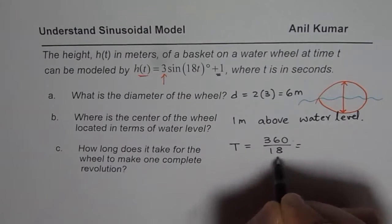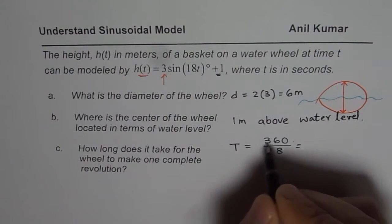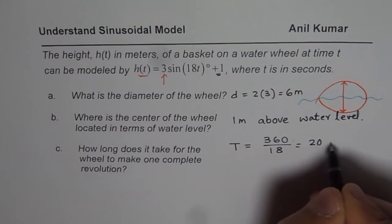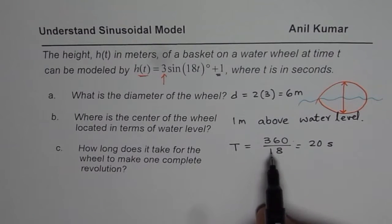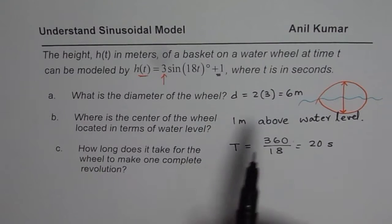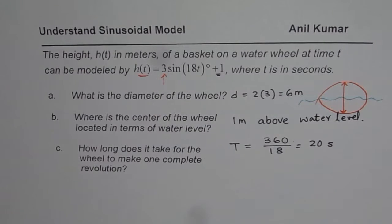So if you divide 360 by 18, you will know how much time one cycle is taking. So that brings us to 20 seconds. So one cycle is taking 20 seconds and you can always find this by dividing 360 by this number, 18.